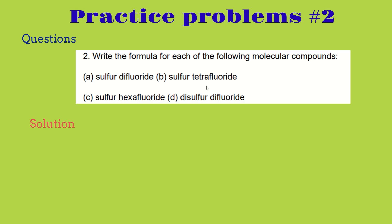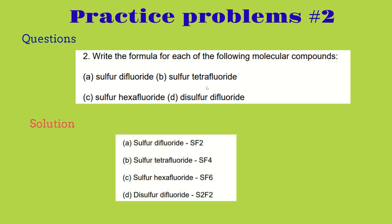For practice problem two, write the formula for each of the following molecular compounds: sulfur difluoride, sulfur tetrafluoride, sulfur hexafluoride, and disulfur difluoride. For sulfur difluoride, we have SF2. For sulfur tetrafluoride, sulfur stays as S, and tetra means 4, so it's SF4. For sulfur hexafluoride, hexa means 6, so it's SF6. For disulfur difluoride, there are two sulfurs and two fluorides, so it's S2F2.